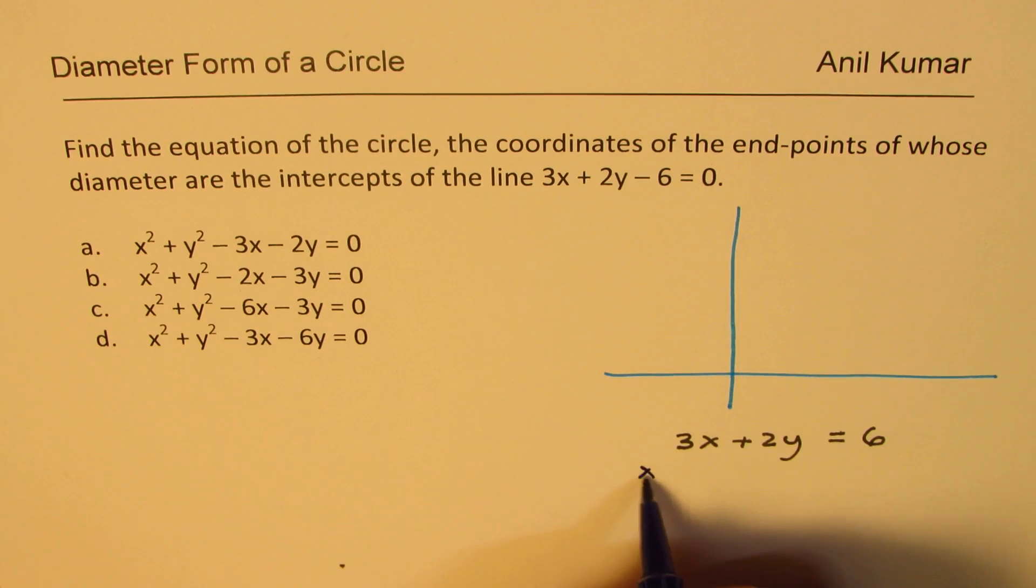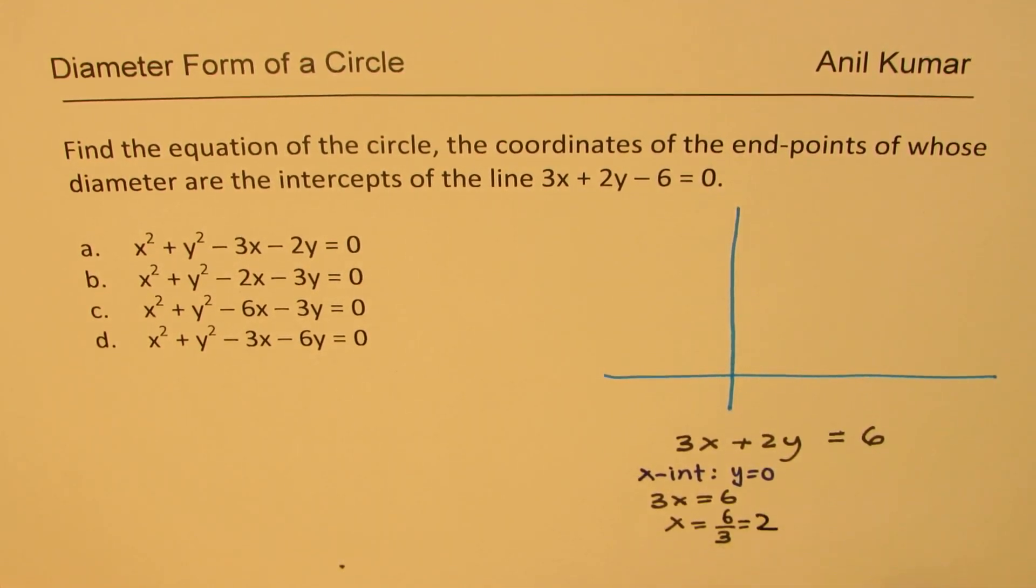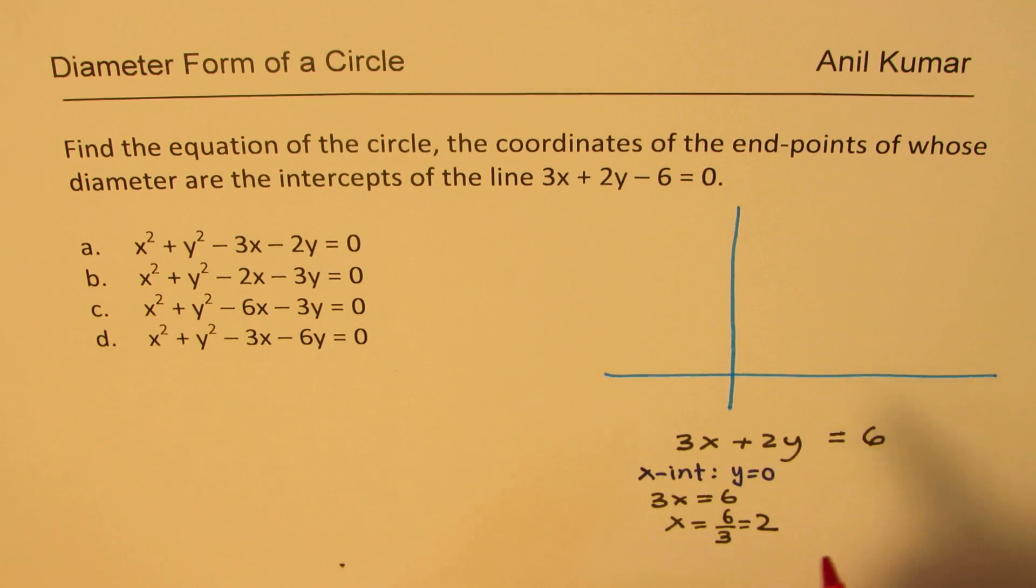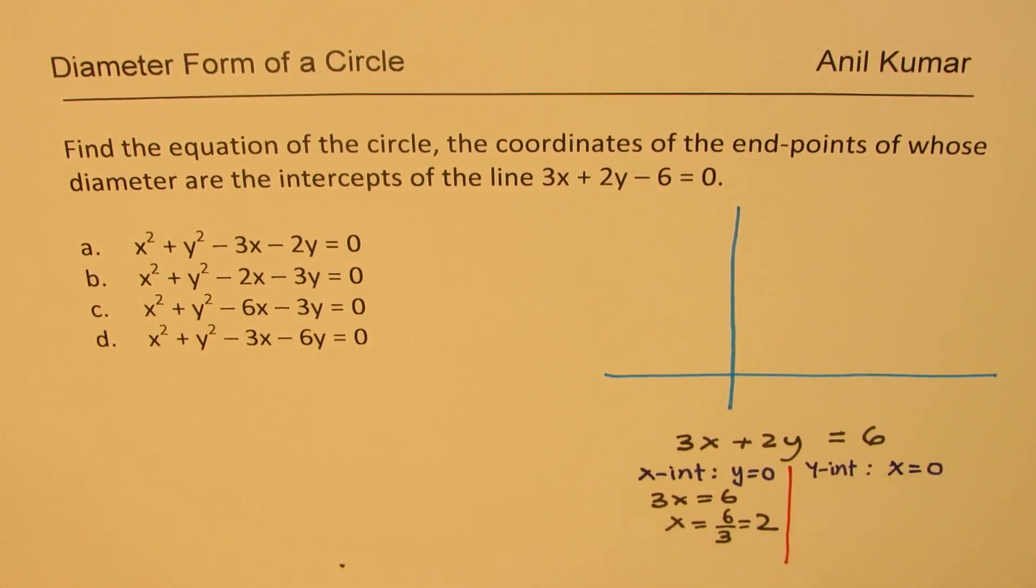Now let's find x and y intercepts. So x intercept means y equals to 0. So if I substitute y equals 0 I get 3x equals to 6 or x is equal to 6 divided by 3 which is 2. Perfect. Now let's find the y intercept. So find y intercept by substituting x equals to 0. So when you substitute x equals to 0 we get 2y equals to 6, y equals to 6 divided by 2 which is 3.